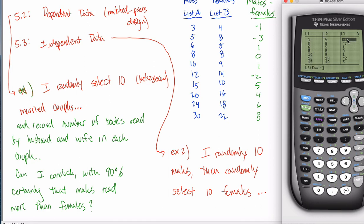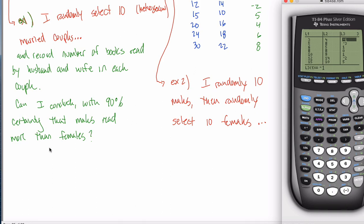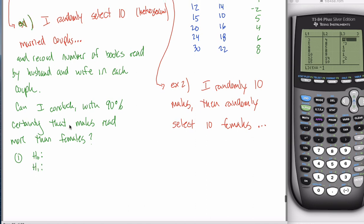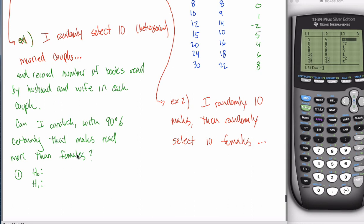Now I have data in L1, L2, and L3. For this example I'll only use L3, but I'm not going to erase L1 and L2 because I'll use them for my next example. For hypothesis testing, step one is always to state the null and alternative hypotheses. There are some similarities to what we've done before, but it's a little different. H0 is the null and H1 or HA is the alternative. Maybe it's easier to start with the alternative: that males read more than females. The null is the skeptical view — males don't read more than females, they read the same amount.